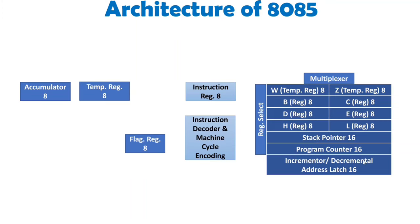After that, the incrementer and decrementer are present. The incrementer operates with the program counter — once one instruction is executed, the program counter gets incremented by one automatically. For the stack pointer there can be both increment and decrement operations. With push operations the stack pointer is decremented, and with pop operations the stack pointer is incremented. After execution of each instruction, the program counter gets incremented by the incremental address latch.